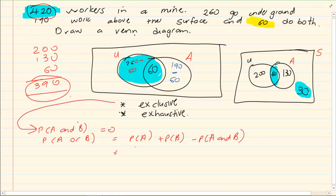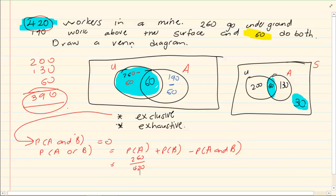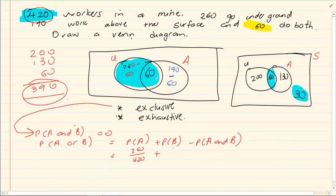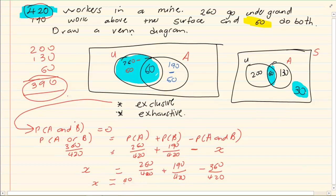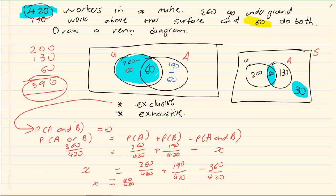We have P of A is 260 over 420, P of B is 190 over 420, minus X. We still want to prove that it is either equal to 0 or it is not. If I get my x alone, I'm going to have 260 plus 190 minus 390 is going to equal to my x. This gives me that x is equal to 60 over 420. That tells me these events are not exclusive.